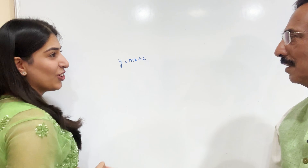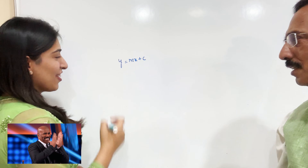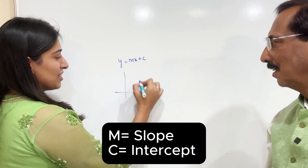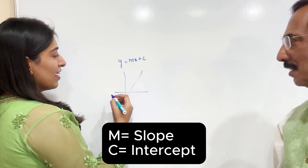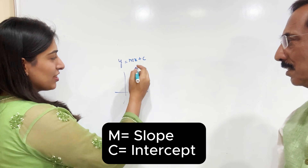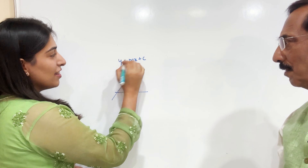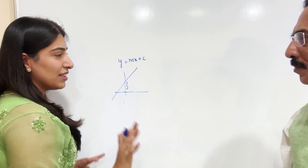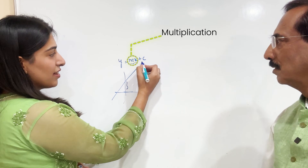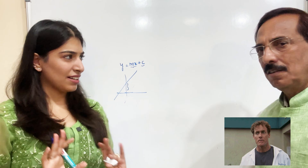What was m? What was c? m is the slope, c is the constant. Very good. So m is the slope, which is like tan theta, and c is the constant — meaning the y-intercept. Correct. So here there are basically two things: multiplication, and then you add some constant. Very simple stuff.